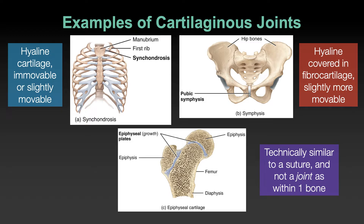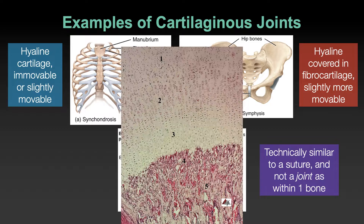If you zoom in on the epiphyseal plate, you'd be able to identify the zone of resting cartilage, the zone of proliferating cartilage, hypertrophic cartilage, calcified cartilage, and then ossified bone tissue - the stages of growth in length of a long bone. Those chondrocytes are really small in resting cartilage at number one; the stacked coins of proliferating cartilage are at number two; they grow in size at number three as hypertrophic cartilage; then calcified cartilage; and finally ossified bone tissue at number five.